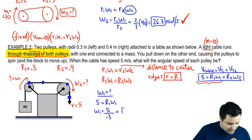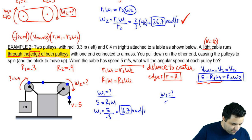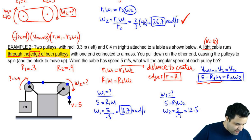And to find omega 2, same thing, 5 equals R2 omega 2. So omega 2 is 5 divided by 0.4, which is 12.5 radians per second.